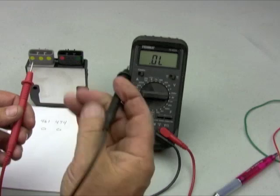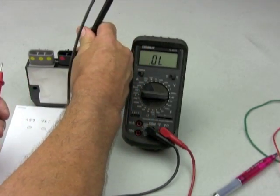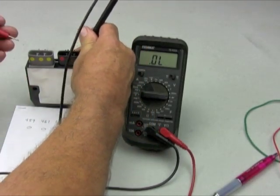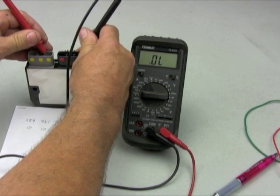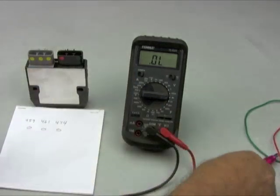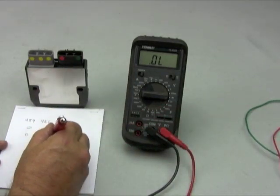Now we're going to take our negative probe, put it on the negative side of the regulator and touch all three of our stator connectors. We have zeros all the way across. Again, that's good.